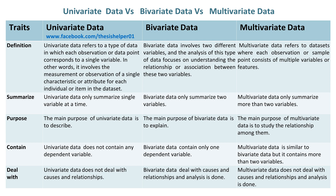Whereas bivariate data involves two different variables, and the analysis of this type of data focuses on understanding the relationship or association between these two variables. Whereas multivariate data refers to data sets where each observation or sample point consists of multiple variables or features.